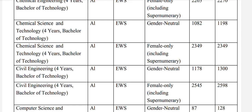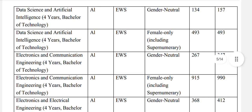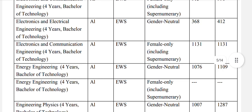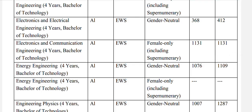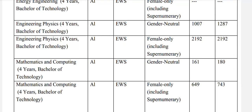Computer Science and Engineering, EWS gender-neutral: 128, and EWS female: 419. Data Science and Artificial Intelligence, EWS gender-neutral: 157, EWS female: 493. Electronics and Communication Engineering, EWS gender-neutral: 347, and for females: 990. Electronics and Electrical Engineering, EWS gender-neutral: 412. Energy Engineering, EWS gender-neutral: 1109. You can see the data by pausing the video. Engineering Physics, EWS gender-neutral: 1287. Mathematics and Computing, EWS gender-neutral: 180.